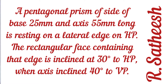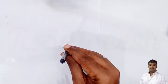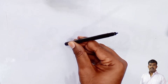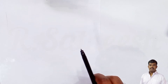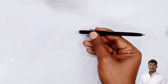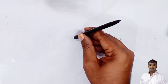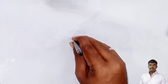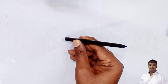The lateral edge is the edge perpendicular to the axis. The edge parallel to the axis is called the lateral edge, so the base edge is resting on HP. The rectangular face containing that edge is inclined 30 degrees to HP, and the axis is inclined 40 degrees to VP. This is an inclined-to-both-planes problem, requiring three stages — initial position, first inclination, and second inclination — giving us six diagrams total.